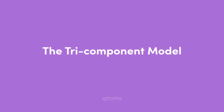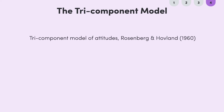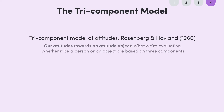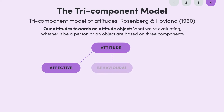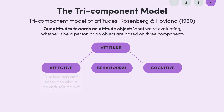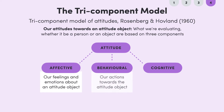Let's now look at a model that explains the components of a stereotype. This model is called the tri-component or tripartite model of attitudes, which was developed by Rosenberg and Hovland in 1960. Our attitudes towards an attitude object — that is, what we're evaluating, whether it be a person or an object — are based on three components known as the ABC of attitudes. These are the affective, behavioral, and cognitive components. The affective component relates to our feelings and emotions about an attitude object. The behavioral component refers to our actions towards the attitude object. The cognitive component is all about our thoughts and ideas about the attitude object.